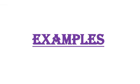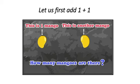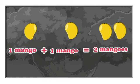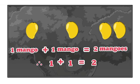Here you see some examples. Now let us first add one and another one — that means one plus one. Children, there you can see there is one mango and this is another mango. So how many mangoes are there? Let's count together. One mango plus one mango is equal to two mangoes. Very good. Therefore, one plus one is equal to two.